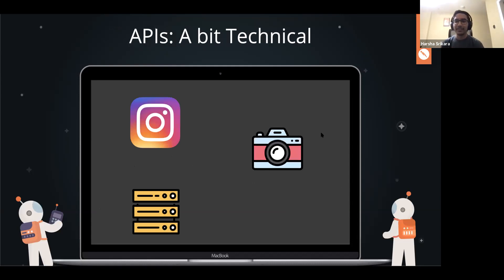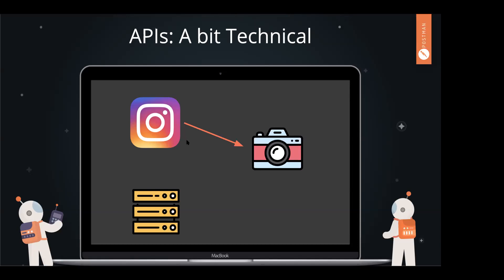Let's get more technical with how the Instagram application works. When you use Instagram and want to post a photo, you request the camera API. Instagram says 'I would like to take a photo, can I do so?' using the camera API. The camera API says sure, let's take a photo. Instagram then sends that photo to a server, and the server sends it out to everyone else in the world. This is how APIs work — one of these is a web API and the other is not. The camera situation is basically just calling a function.